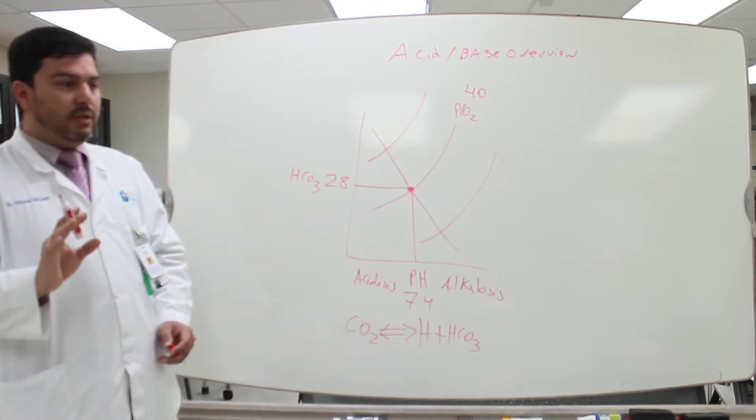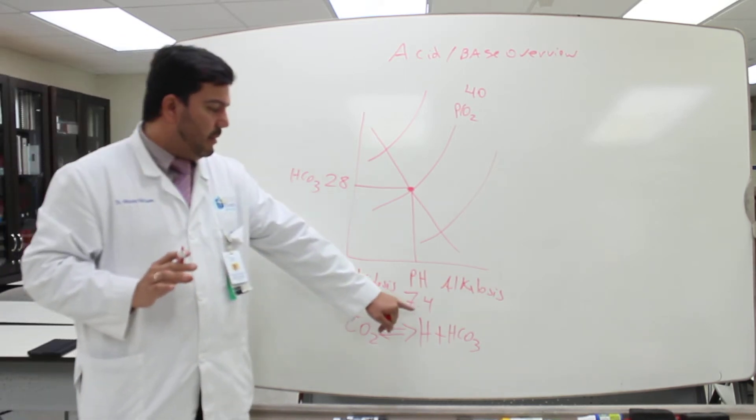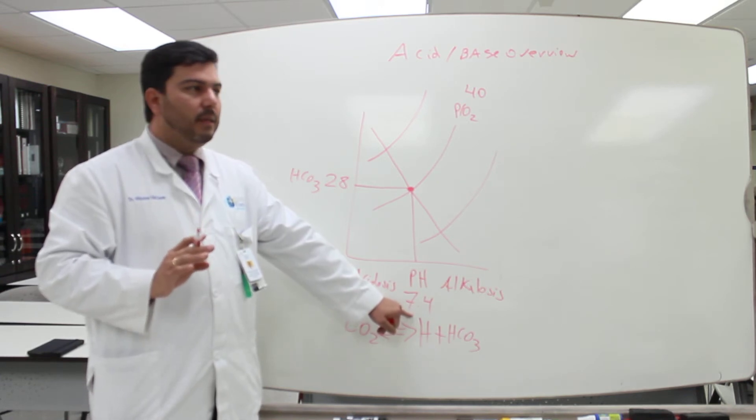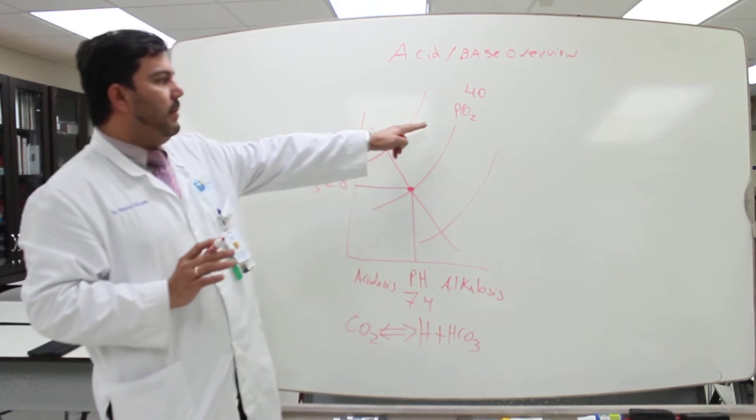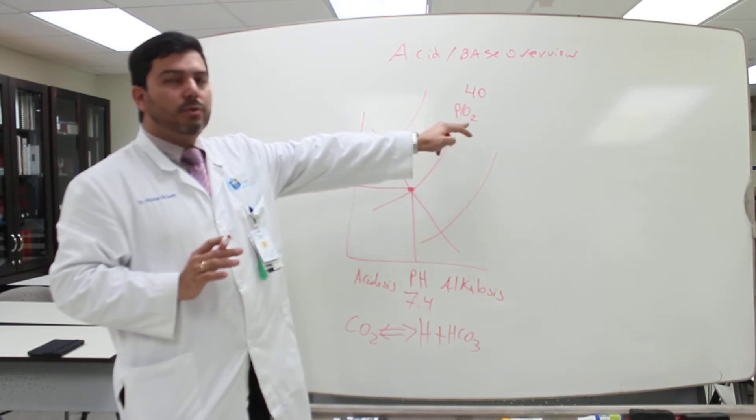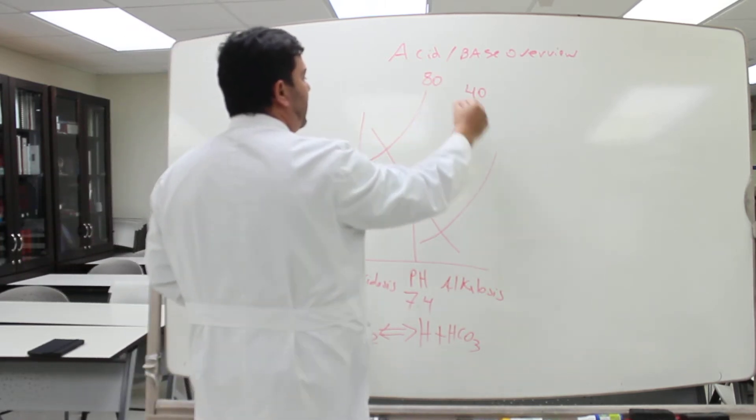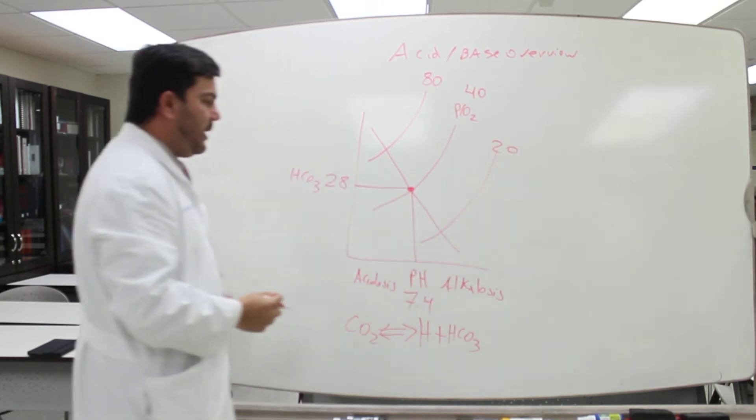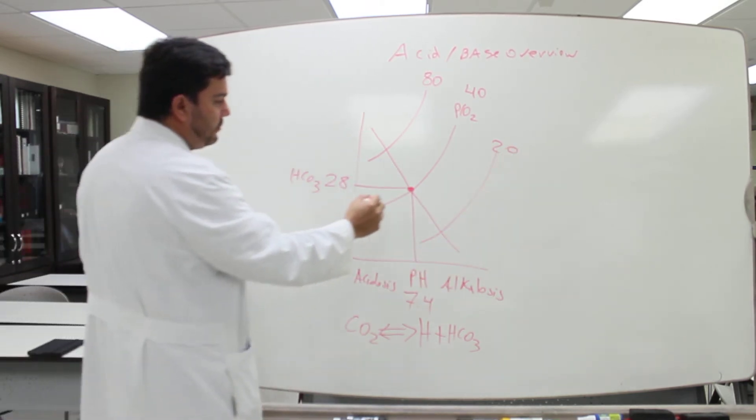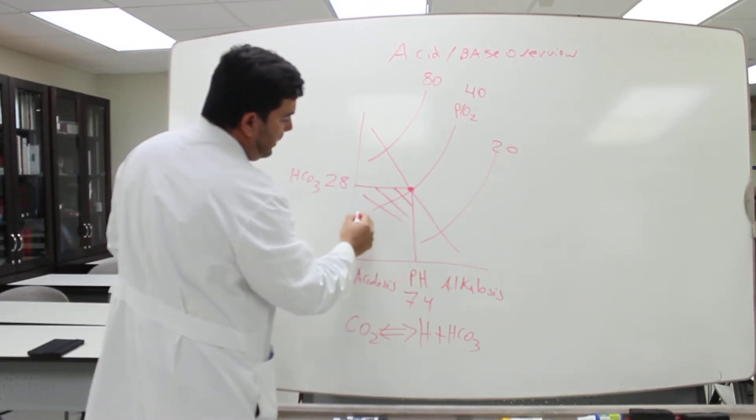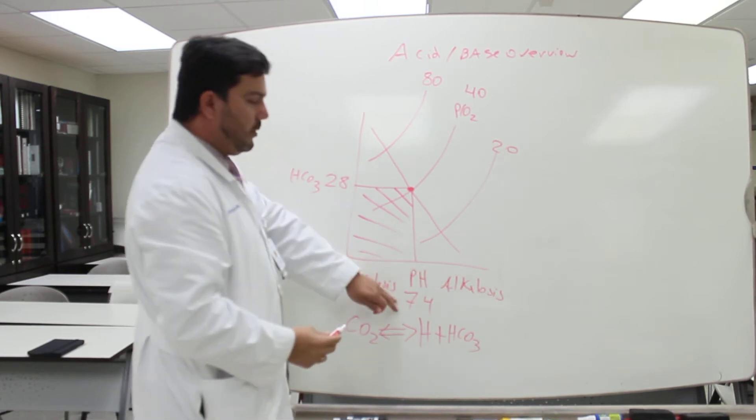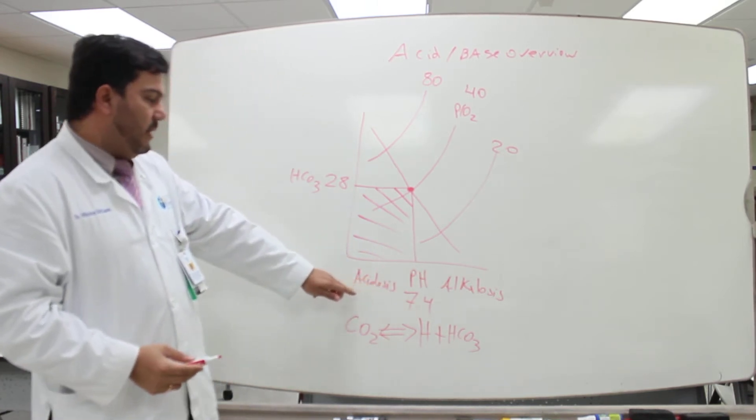So the first thing you have to check is the pH in an ABG. The second number you have to check is the PCO2. The normal number is 40 when it's high and when it's low. So let's see if a patient is right here. Let's think about the pH lower than 7.4. It will give you acidosis.